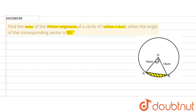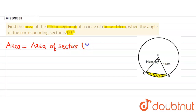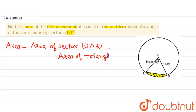The area of the minor segment will be equal to the area of sector OAB minus the area of triangle OAB. Let us first find out the area of sector OAB.